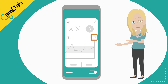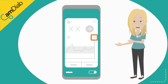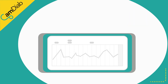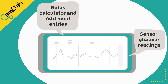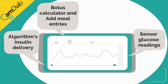By tapping on this icon or turning your phone to landscape, you are able to see a detailed graph. At the top of the graph, you can see carbohydrates and insulin given via the bolus calculator or when carbohydrates are entered via the admin function. The sensor glucose readings are in the middle of the graph.